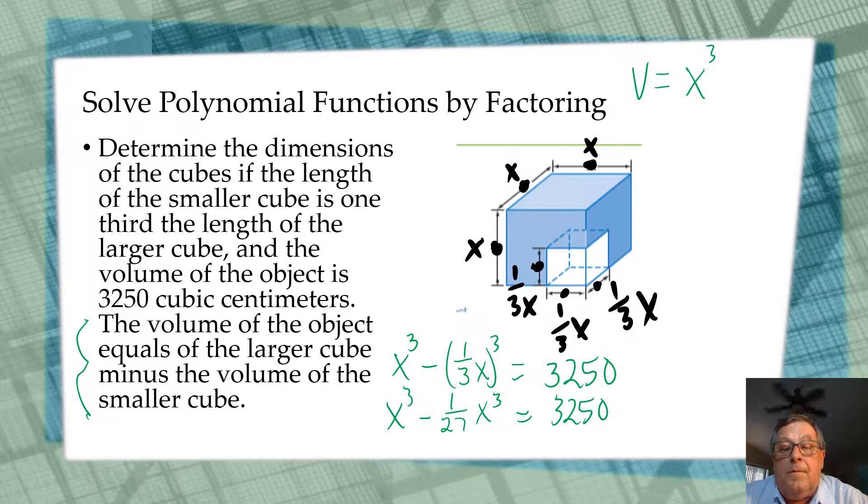Well, I've got the same variable. And then if I convert this x cubed to 27 over 27 x cubed and subtract 1 over 27 from that, I'm going to get 26 over 27 x cubed equals 3,250.